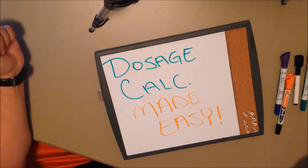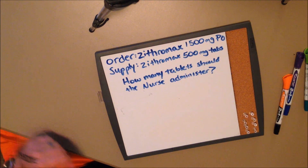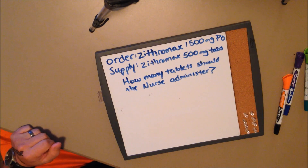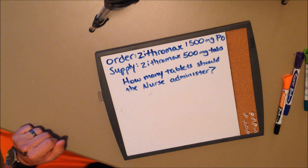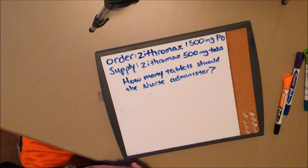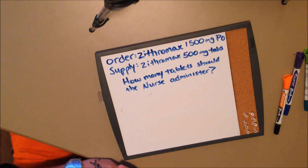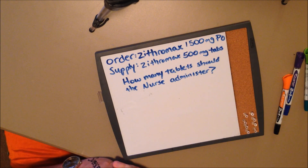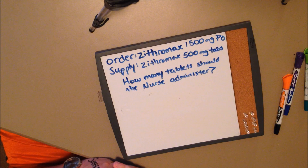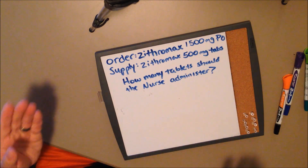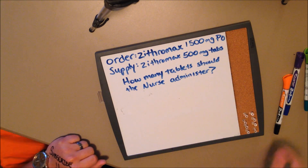So without further ado, let's get into it. Our first question — I want to keep it simple and give you a nice easy introduction into a dosage calculation question. Our order is Zithromax 1500 milligrams PO by mouth. Our supply that we have on hand is Zithromax 500 milligram tablets. The question is: how many tablets should the nurse administer?